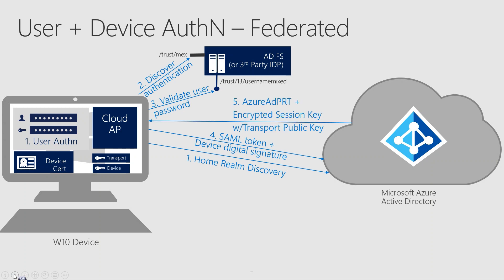Azure AD validates the SAML token issued by your IDP, validates the device signature, and issues a Primary Refresh Token to the device. In addition, Azure AD also secures the PRT by sending a proof of possession key called the session key, which is encrypted using the transport key that was also generated during device registration. This session key can only be decrypted by the private transport key that is present on the same registered device. The transport key is protected by the TPM, so it protects against any unauthorized access.